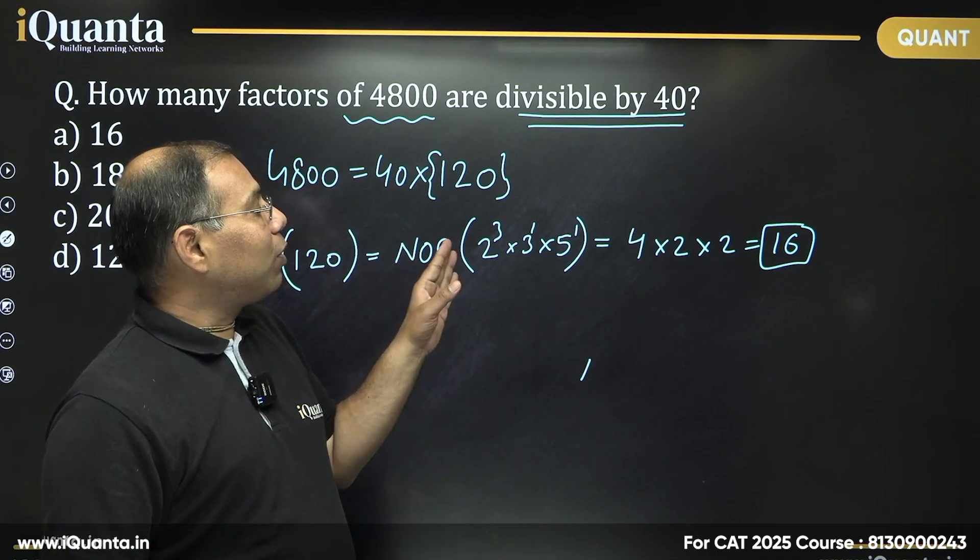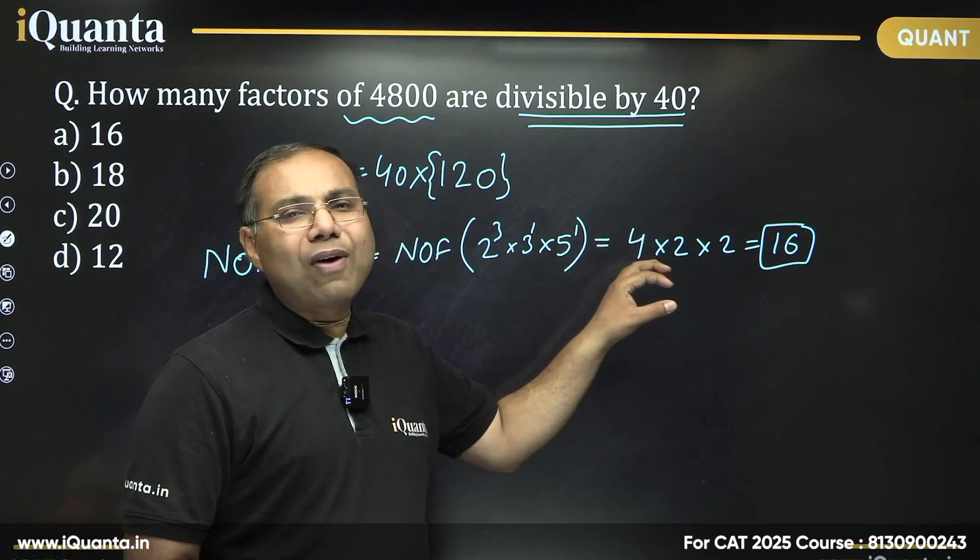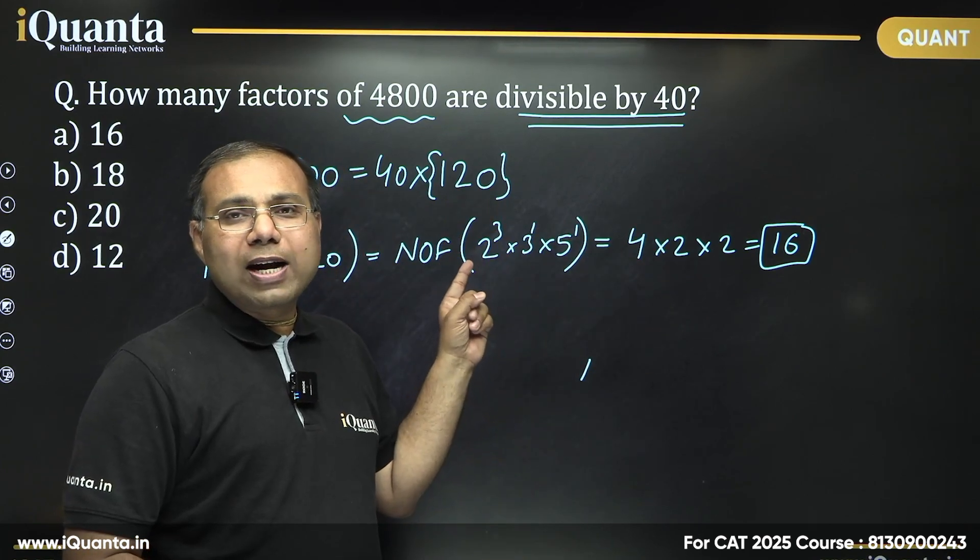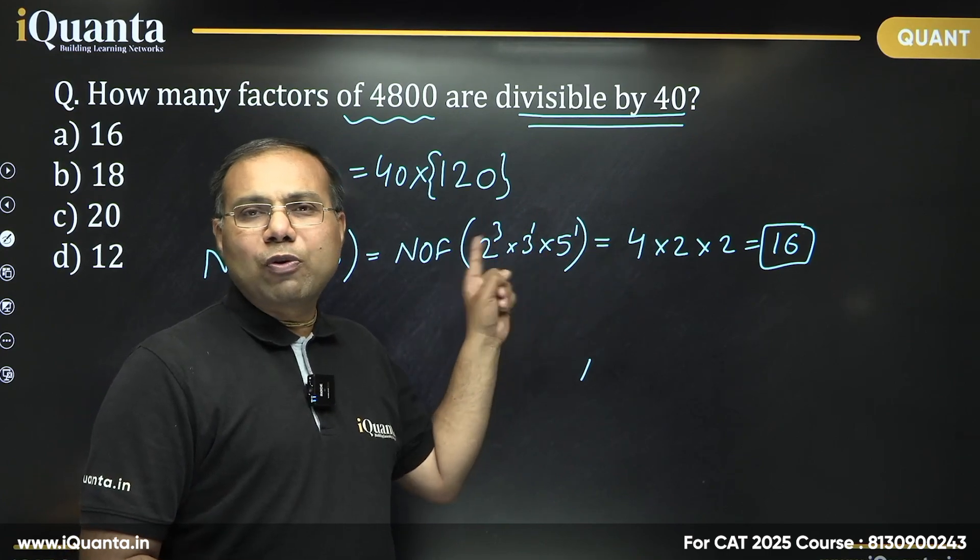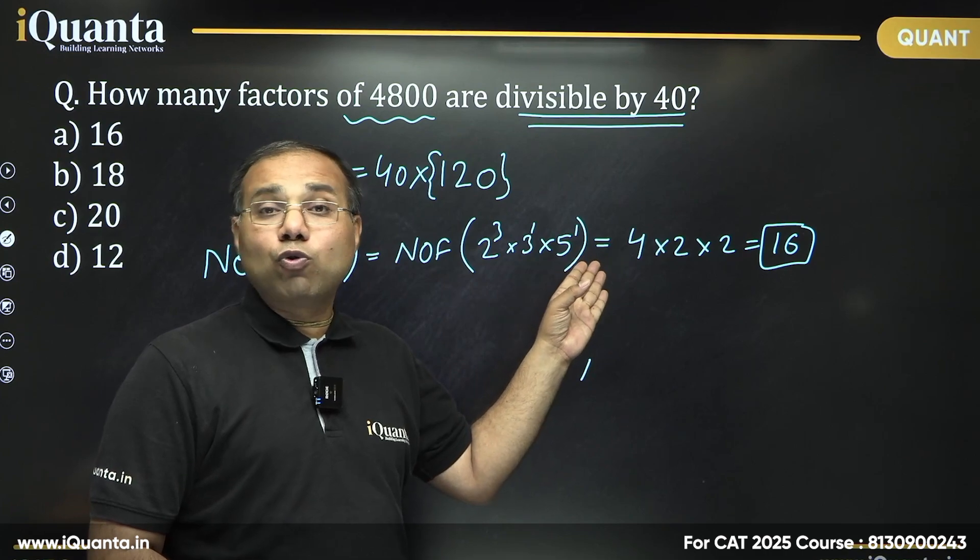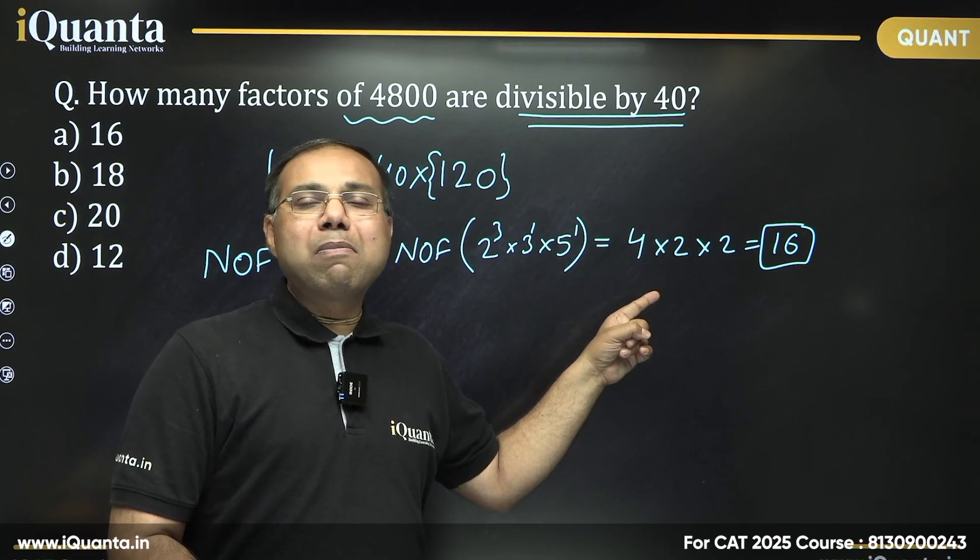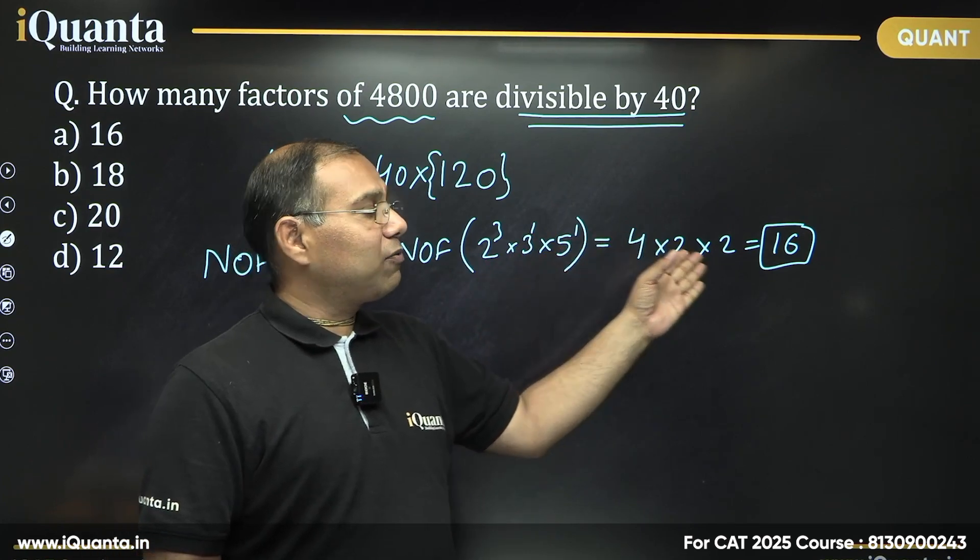So how the contribution of powers of 2 would be there in my factor, there are 4 ways for that including 2 power 0, right? My factor may be multiple of 2 cube or 2 square or 2 power 1 or 2 power 0. There are 4 ways to select a power of 2. Exactly same way, there are 2 ways to select a power of 3. It may be multiple of 3, it may not be, right? 3 power 1 or 3 power 0. Same way for 5 as well, right?